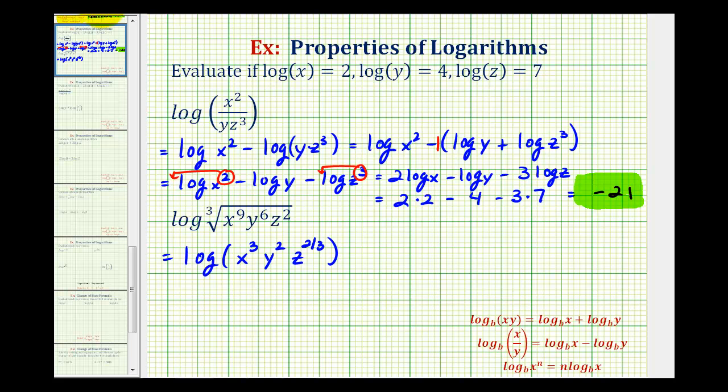Now we can expand this. We have a product here and a product here. In this case, we'll have a sum of three logs using the product property. We're going to have the log of x to the third plus the log of y squared plus the log of z to the two-thirds. And again, now we'll apply the power property of logarithms.